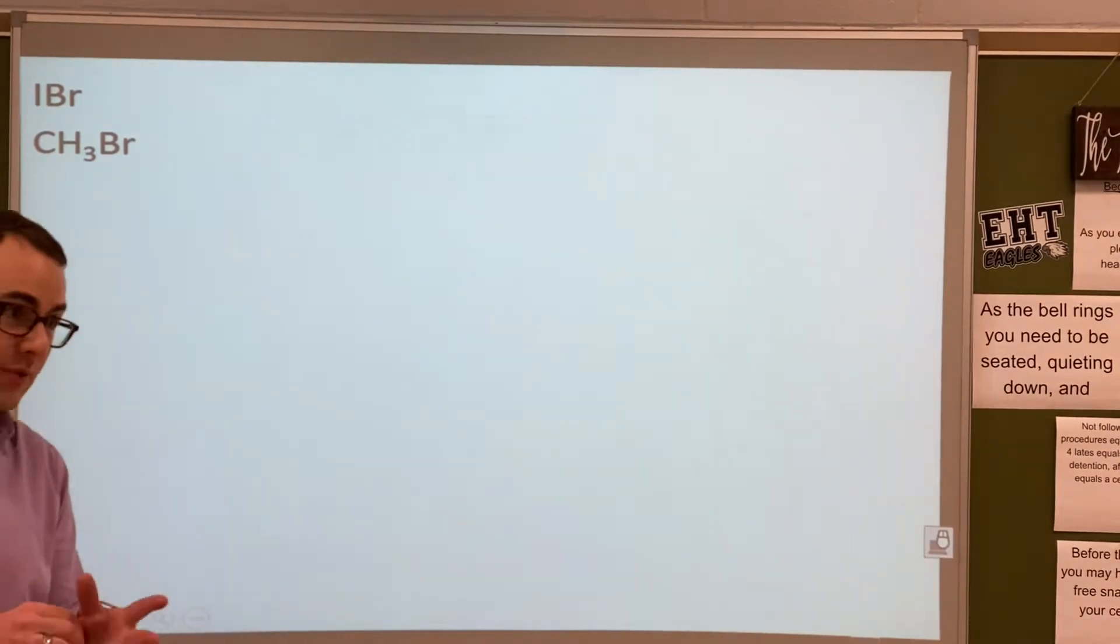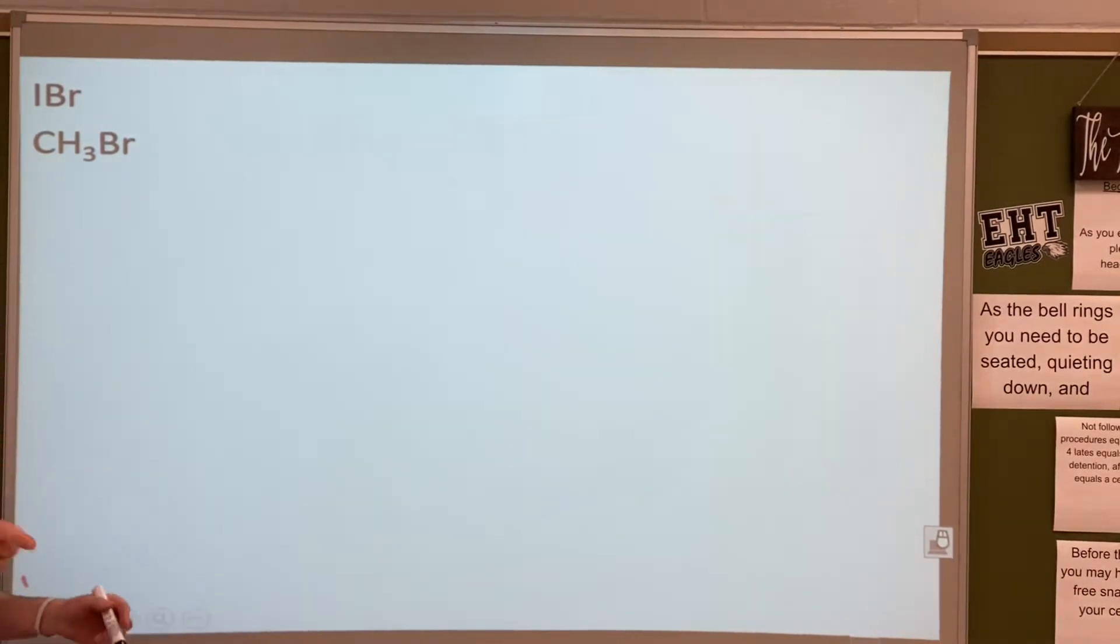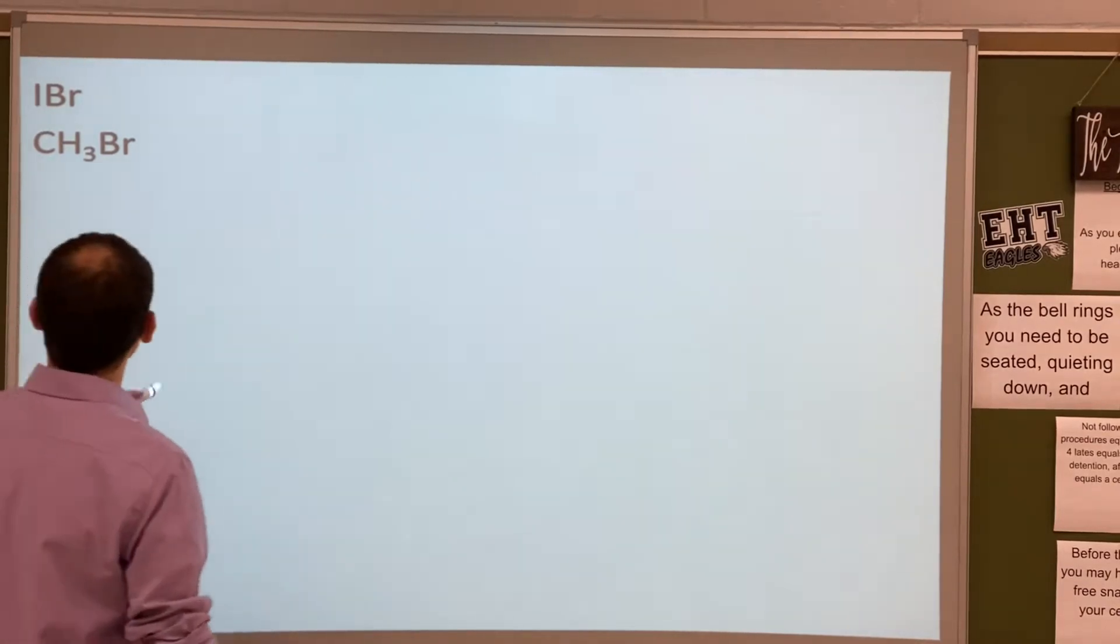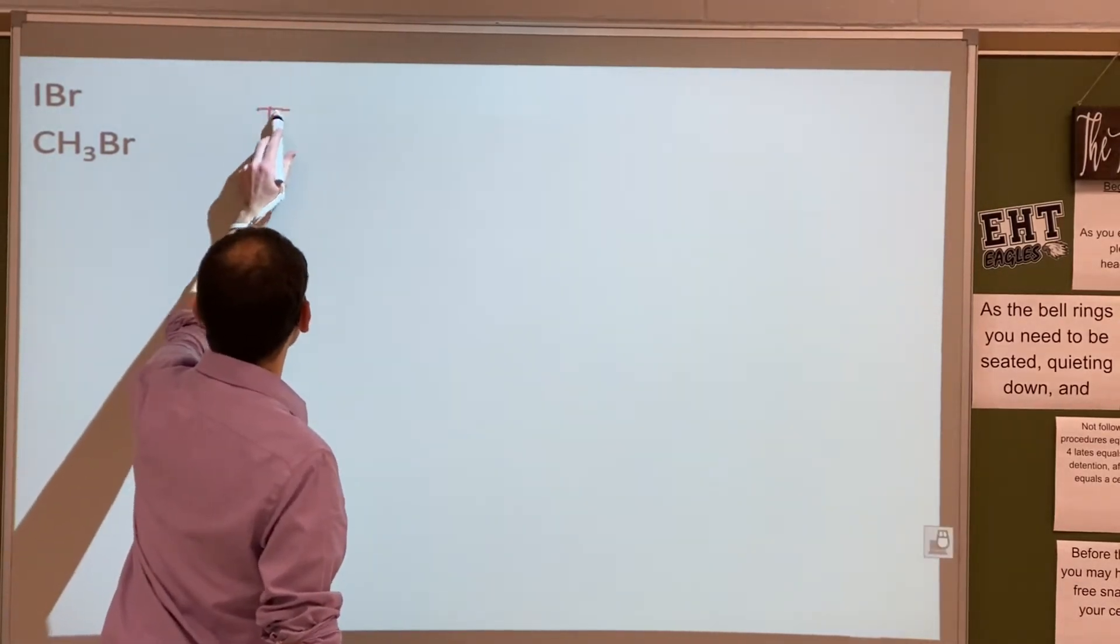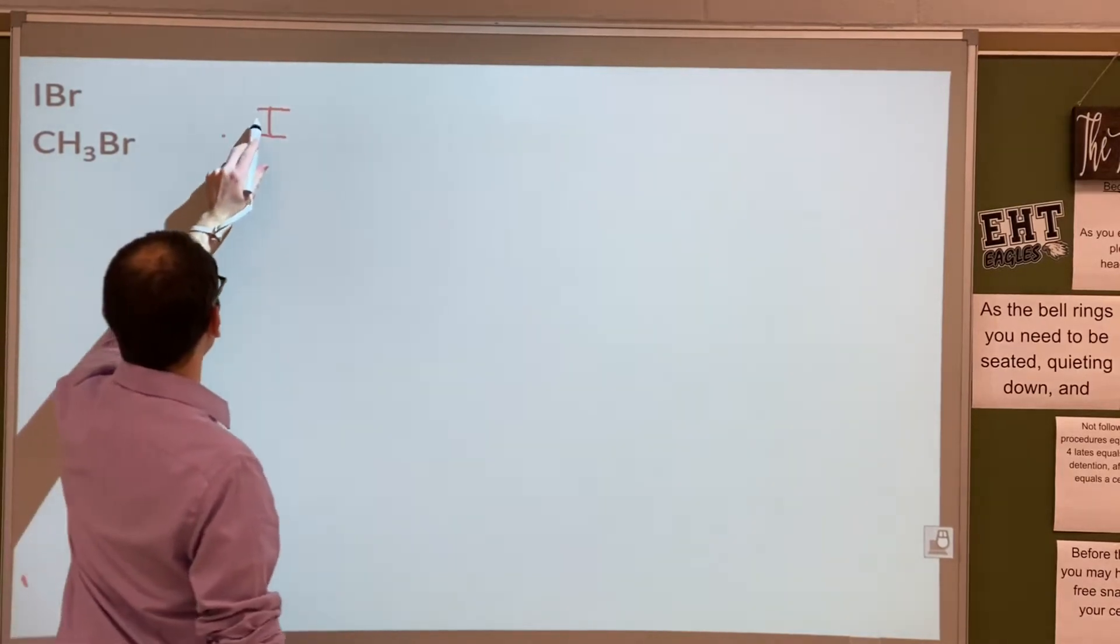Let's go over four examples for everything we've done so far in this chapter to help with any confusion you may have. I'm going to need your help for electronegativity numbers. So let's start off with iodine and bromine.